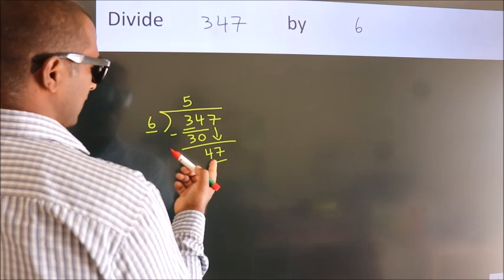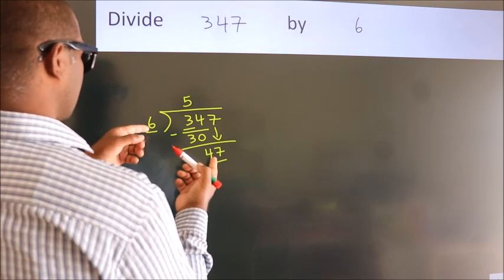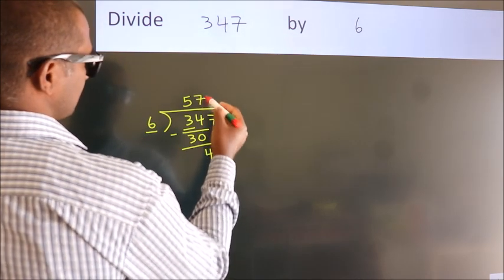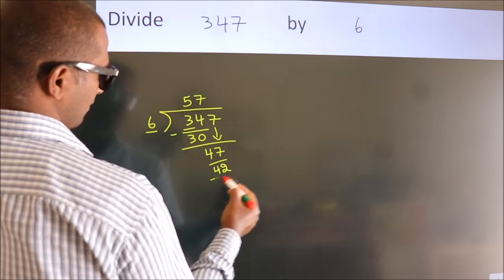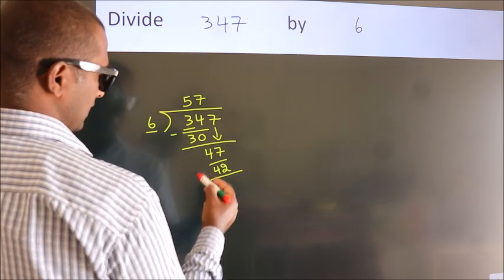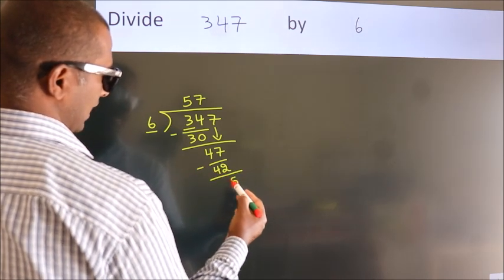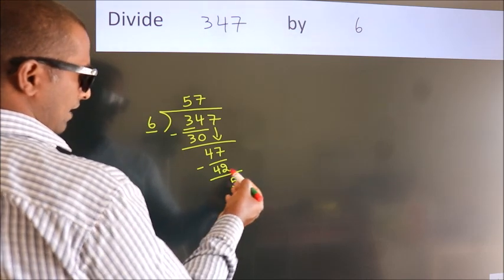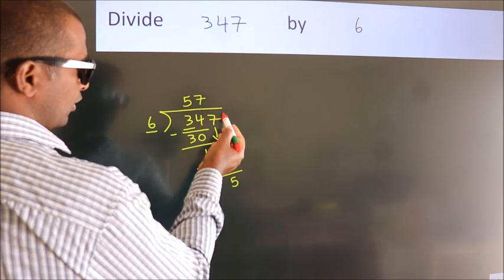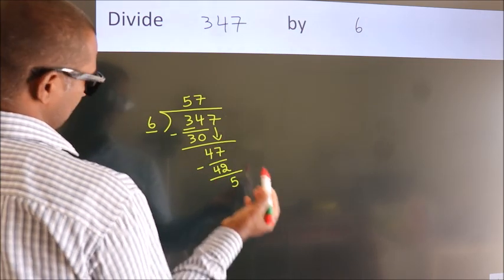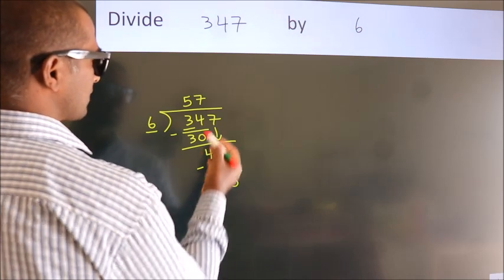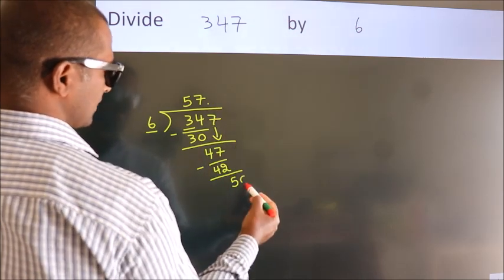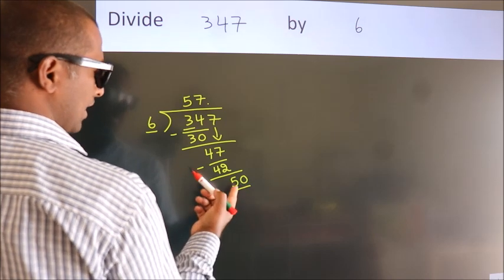A number close to 47 in the sixth table is 6 sevens, 42. Now we subtract. We get 5. After this, no more numbers to bring down, so what we do is we put a dot, take 0. So 50.